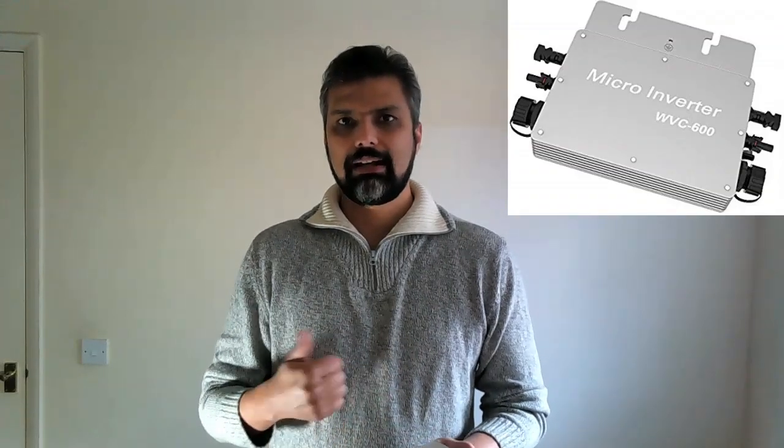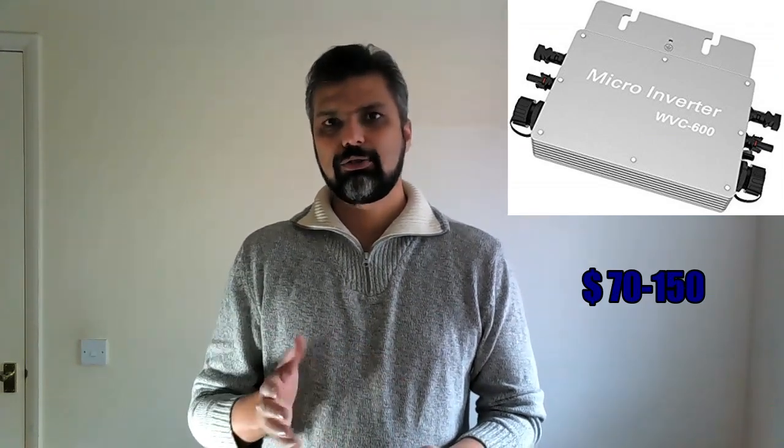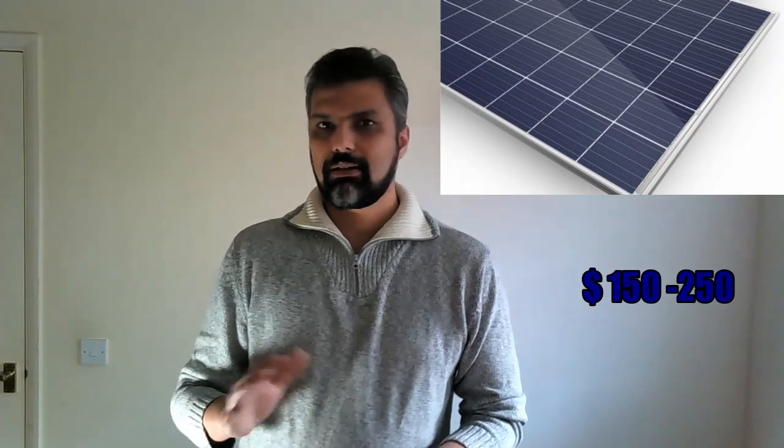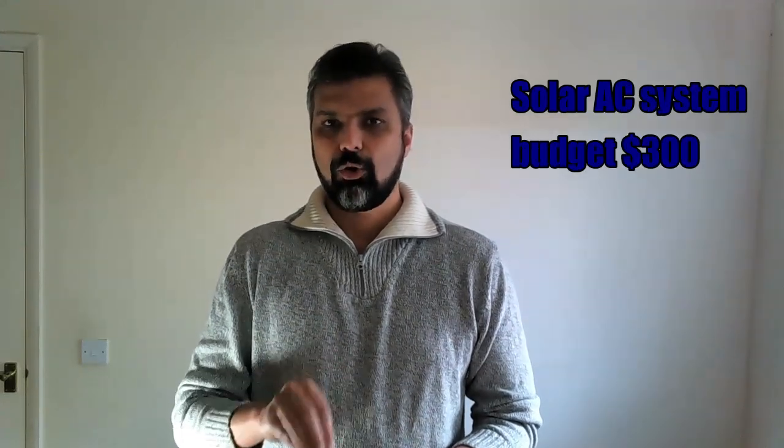These DC systems do not feed energy into your home grid. For that we require solar AC systems. With a solar AC system you can feed electricity into your home microgrid. For around $300 you can get a 300-watt solar panel and also a micro inverter. You don't need a full-blown large inverter — a micro inverter will easily manage a single 300-watt panel, costing somewhere between $70 to $150, while the panel costs around $150 to $250.